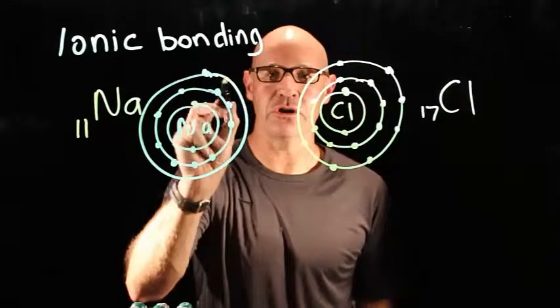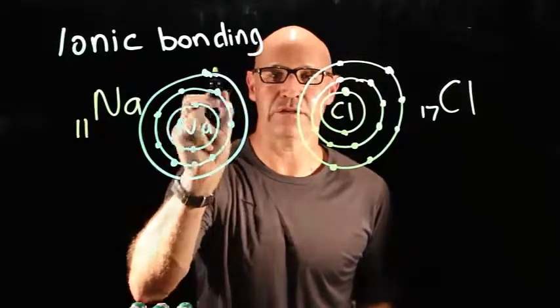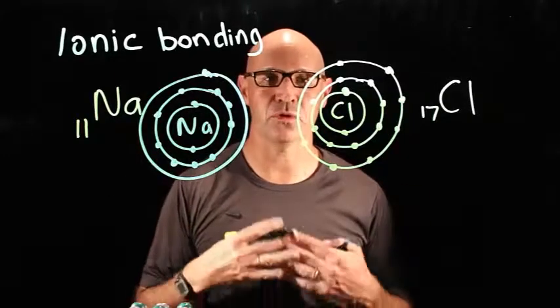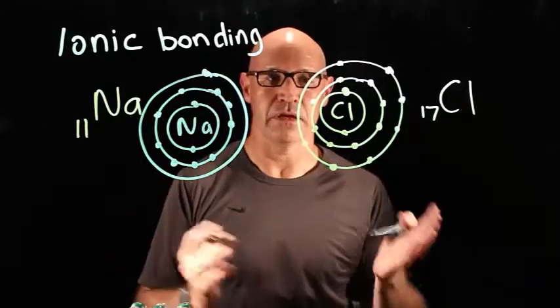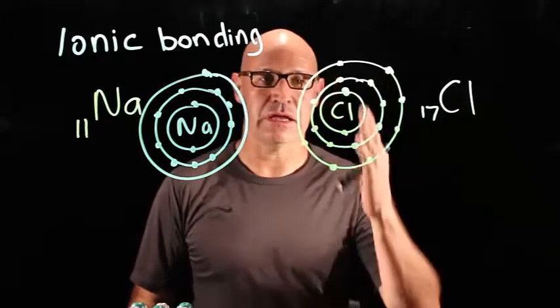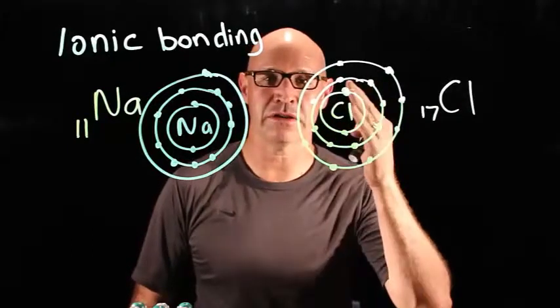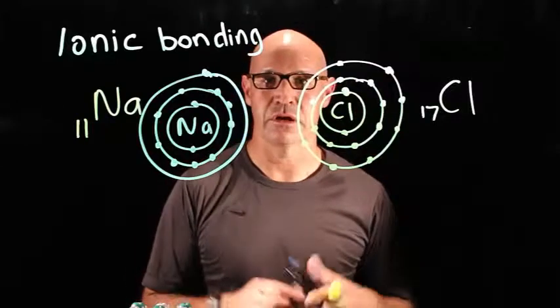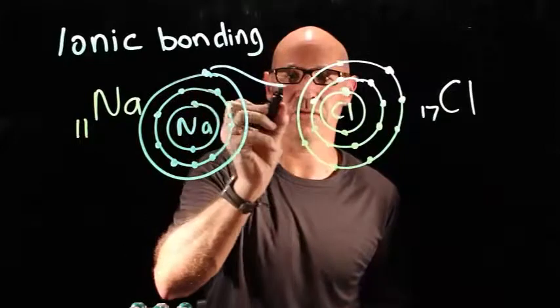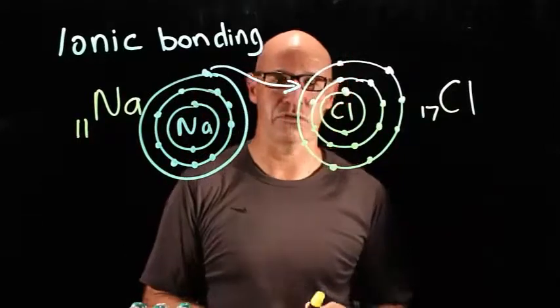So, sodium has 1 electron in its outer shell that, under the right circumstances, will donate. Chlorine has 7 electrons in its outer shell. In the right circumstance, it will accept an electron. Perfect timing. Sodium wants to give an electron to chlorine.